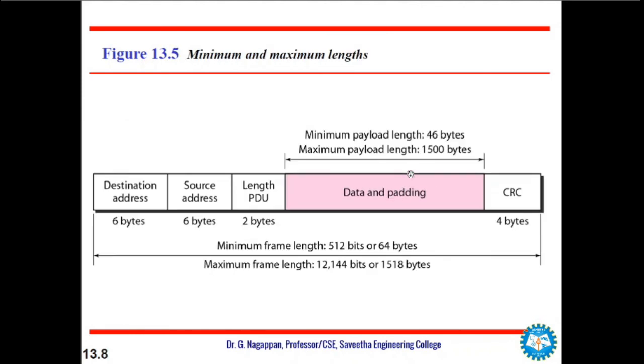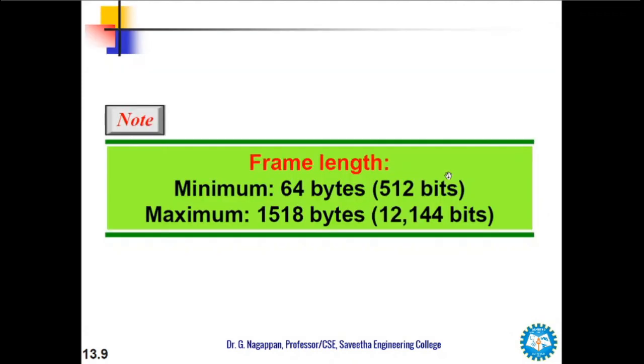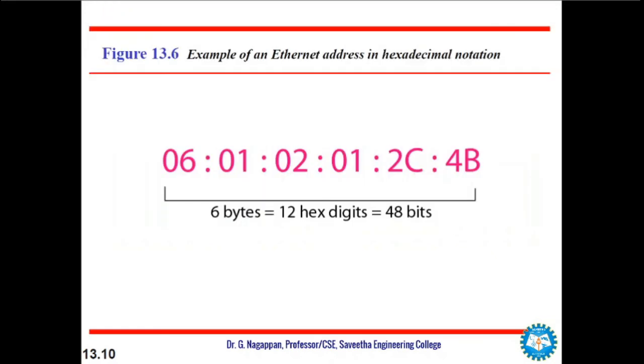When you think about the length of the frame, there can be a minimum length and maximum frame length. The destination address is 6 bytes fixed, source address is 6 bytes fixed, length of the PDU is 2 bytes. The data can vary from 46 bytes to 1500 bytes, and CRC is fixed to 4 bytes. So totally, the minimum frame length can be 64 bytes, and the maximum can be 1518 bytes. This is 512 bits to 12,144 bits.